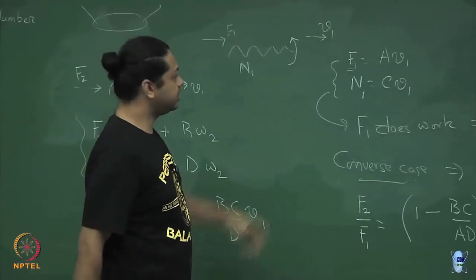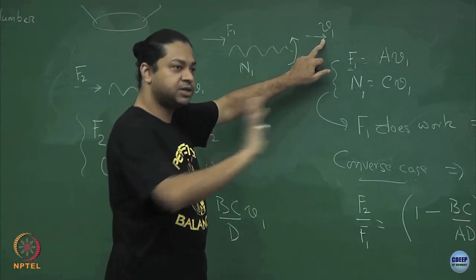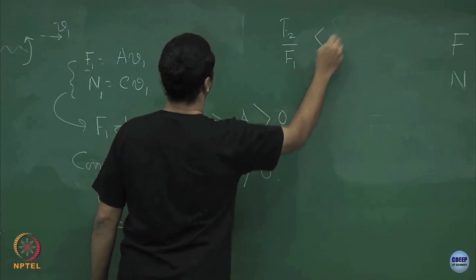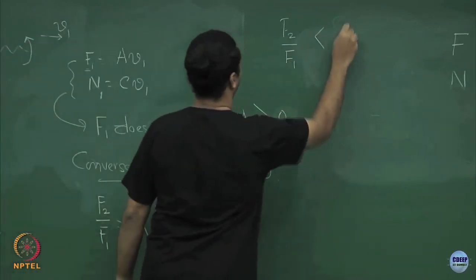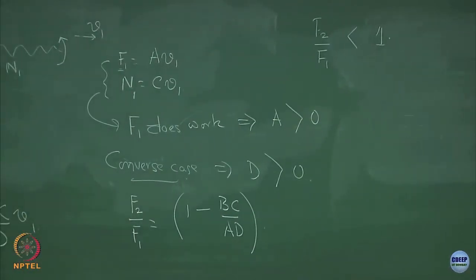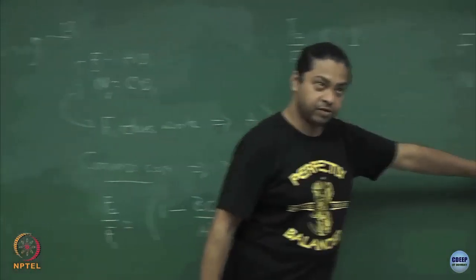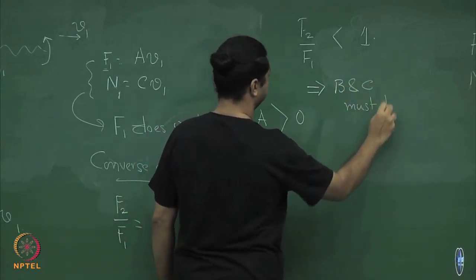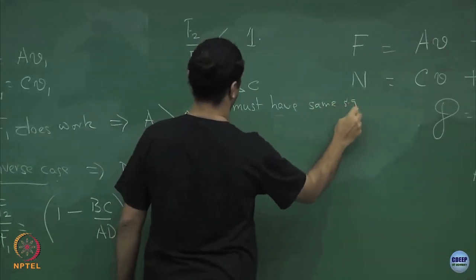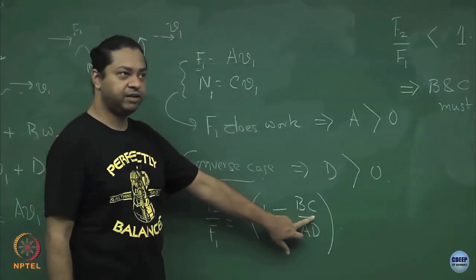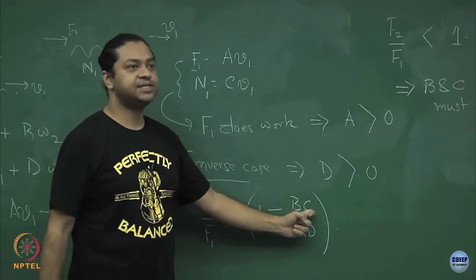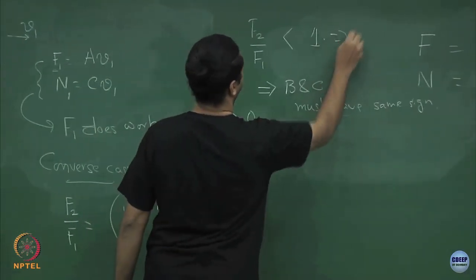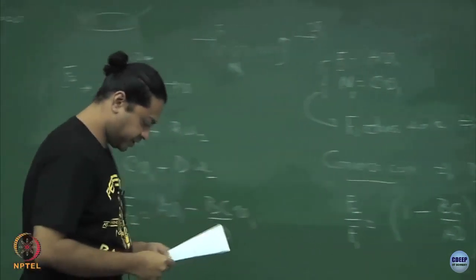So very generally, f2 must be less than f1, which means f2/f1 must be less than 1. This means 1 − BC/(AD) < 1, so BC/(AD) > 0. Since A and D are both positive, this implies that B and C must have the same sign — i.e., BC must be greater than or equal to 0.